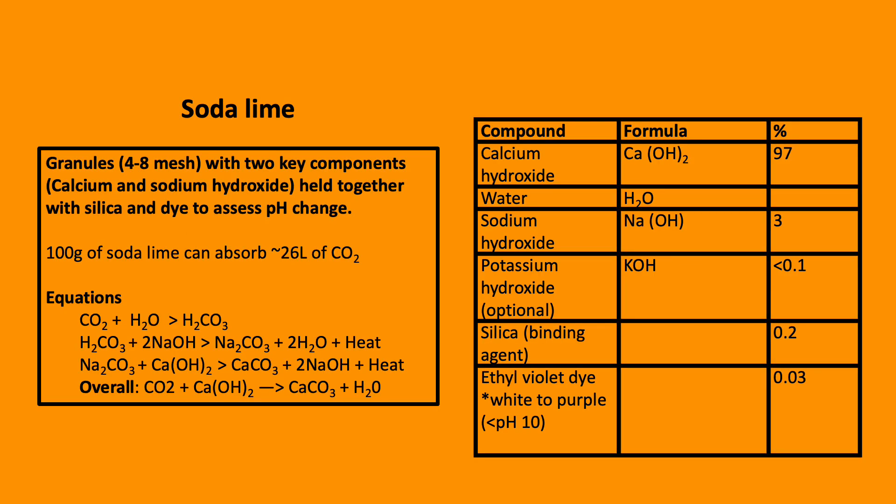Soda lime is a white-grayish coloured crystalline solid and has two key features. It reacts with carbon dioxide, thus removes CO2 from the circuit, and also provides an element of humidification of the system. It is presented as granules of 4-8 mesh. The granules will pass through a mesh which is 4 holes per square inch, but not 8.